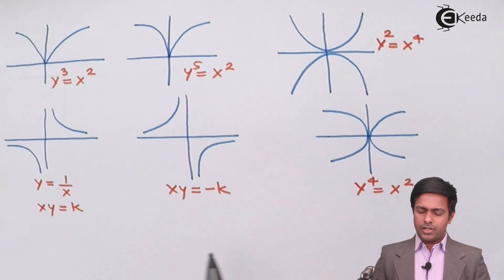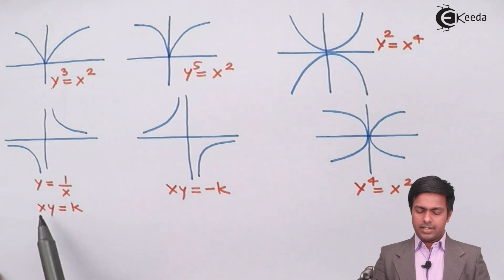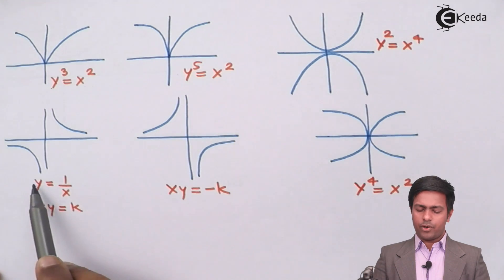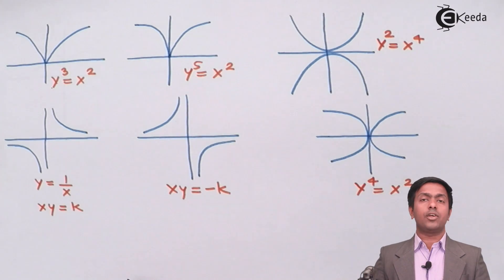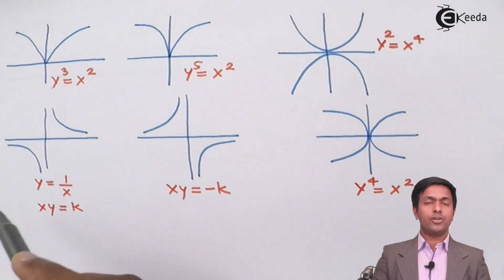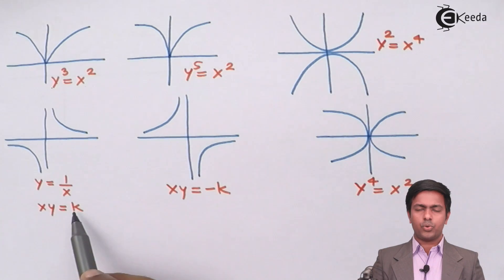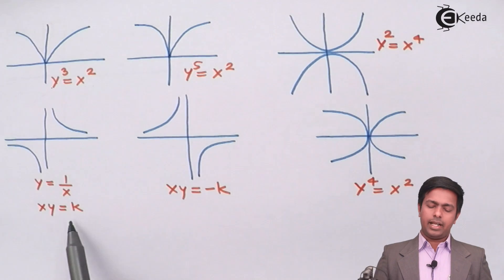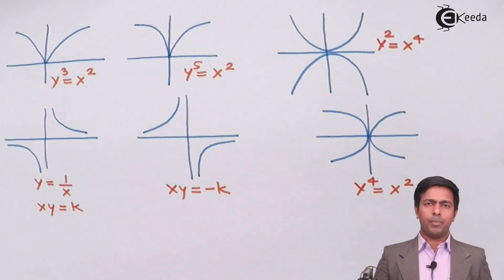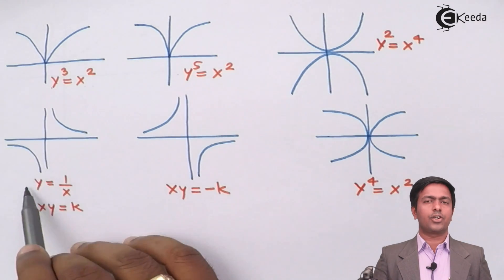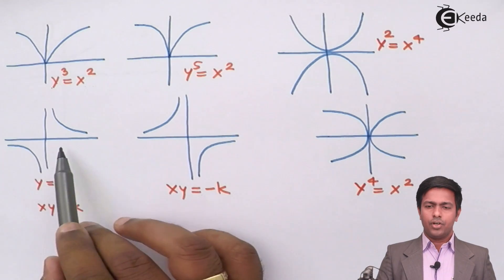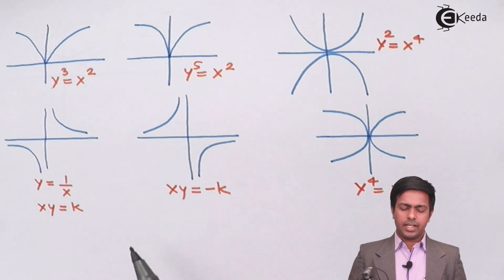Next, we have XY = k, which can also be written as Y = k/X. This is called a rectangular hyperbola. Whenever we have XY = k (a positive constant), the rectangular hyperbola lies in the first and third quadrant. If XY = -k (a negative constant), it shifts to the second and fourth quadrant.